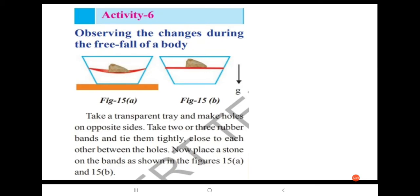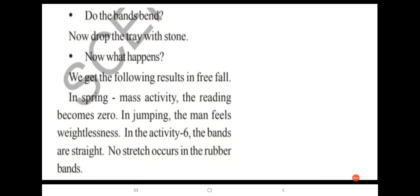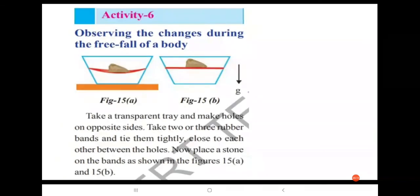Observe figures 15A and 15B carefully. Take a transparent tray and make holes on opposite sides. Take two to three rubber bands and tie them tightly close to each other between the holes, as shown in the figure. Now place a stone on the bands. Do the bands bend? Yes, the rubber bands bend — you can see this in figure 15A.